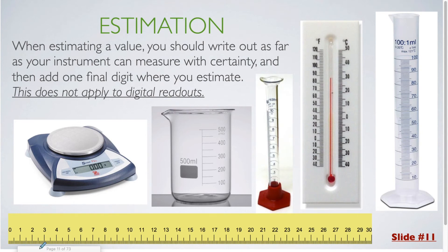All right, the next concept that we are going to be covering in part one is estimation. When estimating a value, you should write out as far as your instrument can measure with certainty, and then add one final digit where you estimate. And this does not apply to digital readouts.